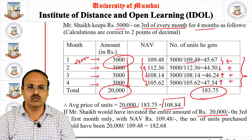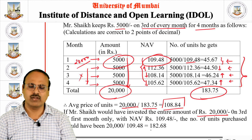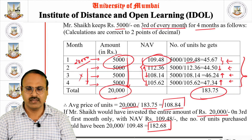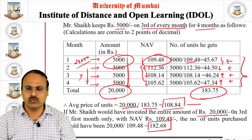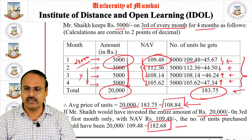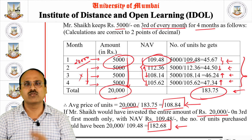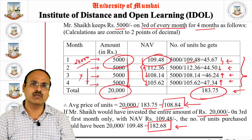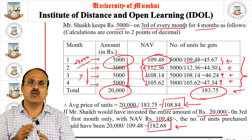Had Mr. Sheikh invested ₹20,000 as a lump sum in the first month at NAV ₹109.48, he would have purchased 182.68 units. By doing a Systematic Investment Plan of ₹5000 per month, he purchased 183.75 units — more units than the lump sum approach. This example demonstrates how the investor may benefit through monthly fixed-interval investment in SIPs, getting a lower average cost of ₹108.84 per unit.